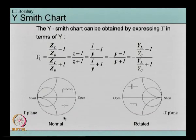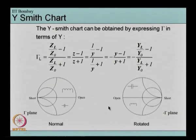If suppose this is our normal Smith chart, then we saw that for a normal Smith chart the far end was short and the near end was open. In this y Smith chart this far end will be open and the near end short, and you can also rotate the y Smith chart so that this part becomes open and this part becomes short.